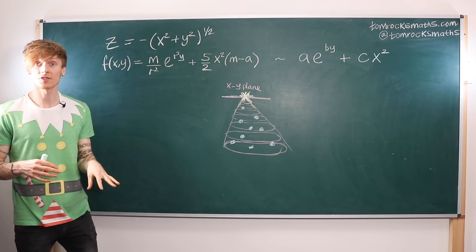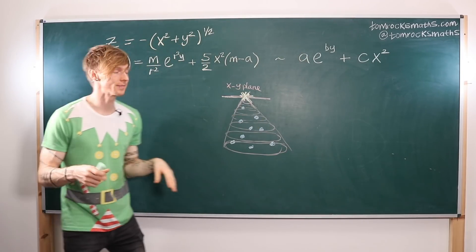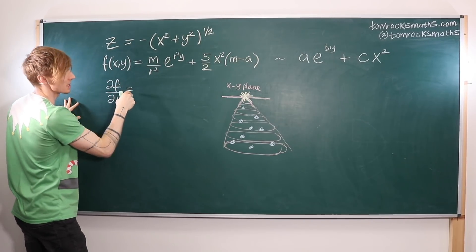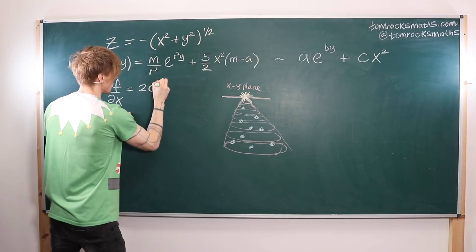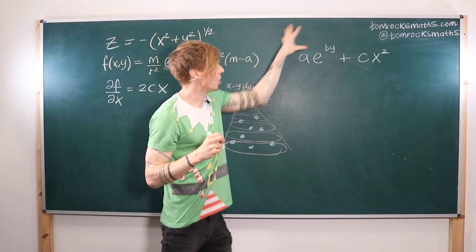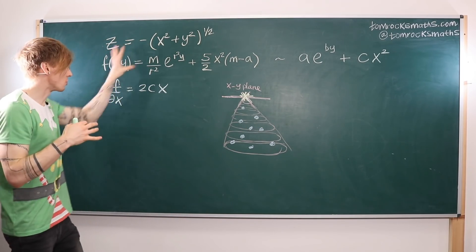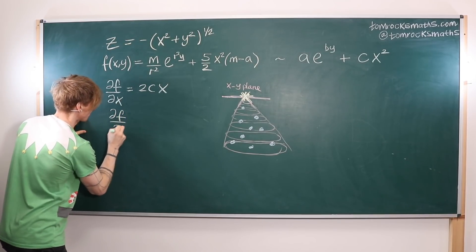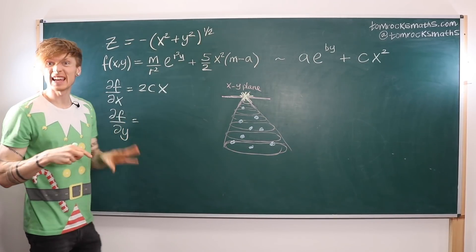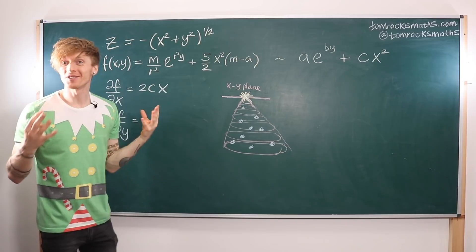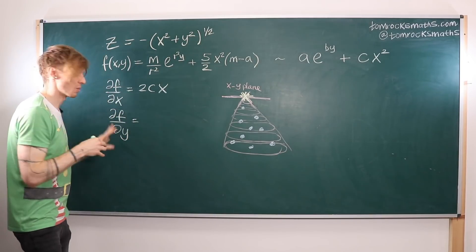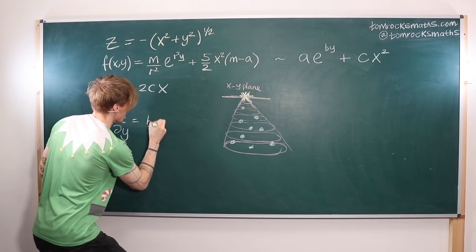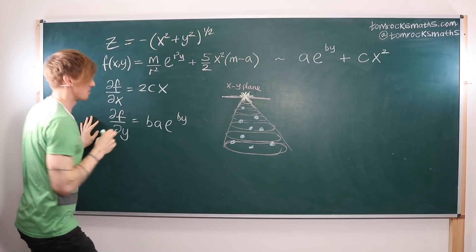If we now calculate the partial derivatives for the generalized function, we get ∂f/∂x = 2cx, because the first term only depends on y so we ignore it when we do the x partial derivative. And then ∂f/∂y—now we're only interested in the first term because the second one depends only on x, so this gives us ba·e^(by).